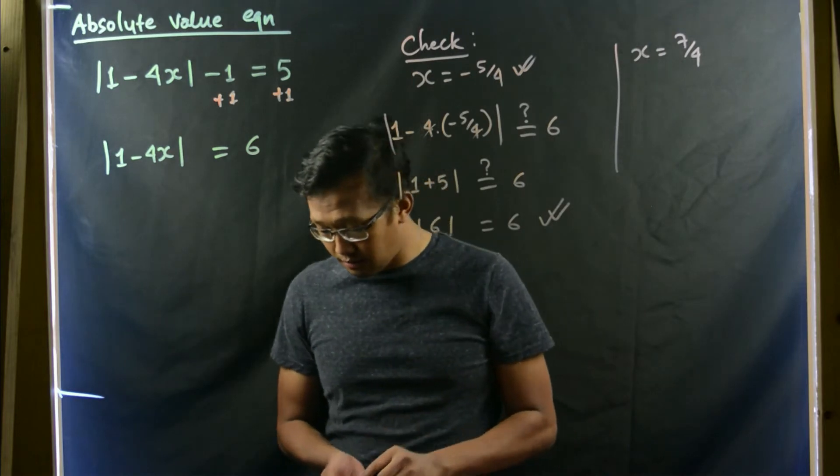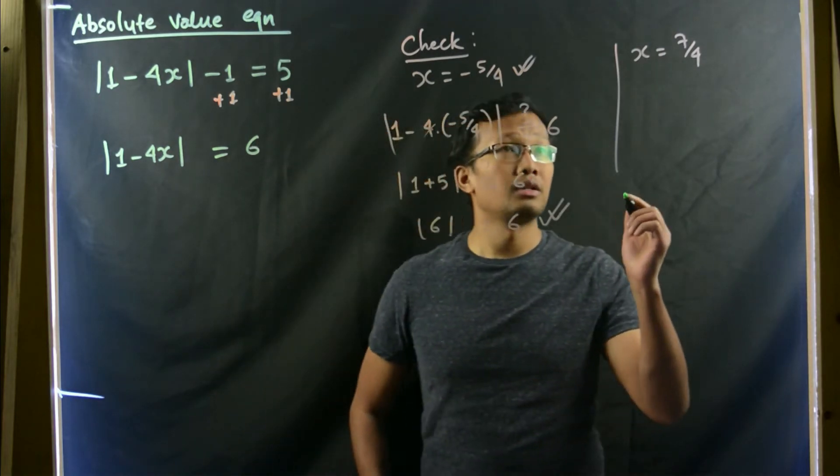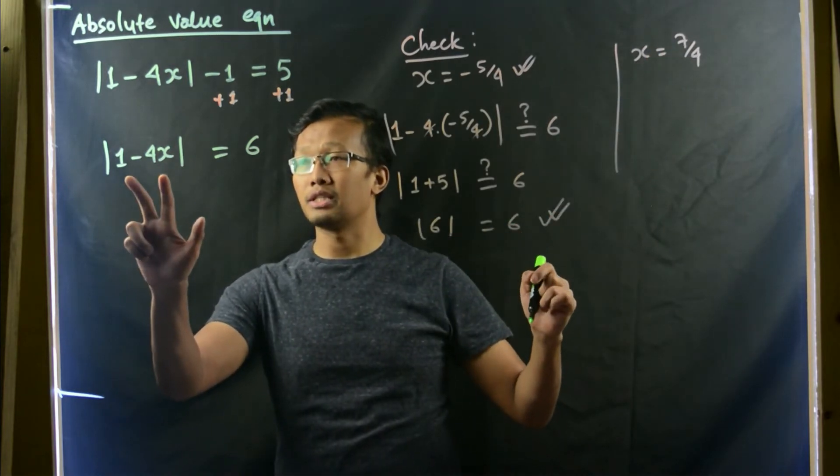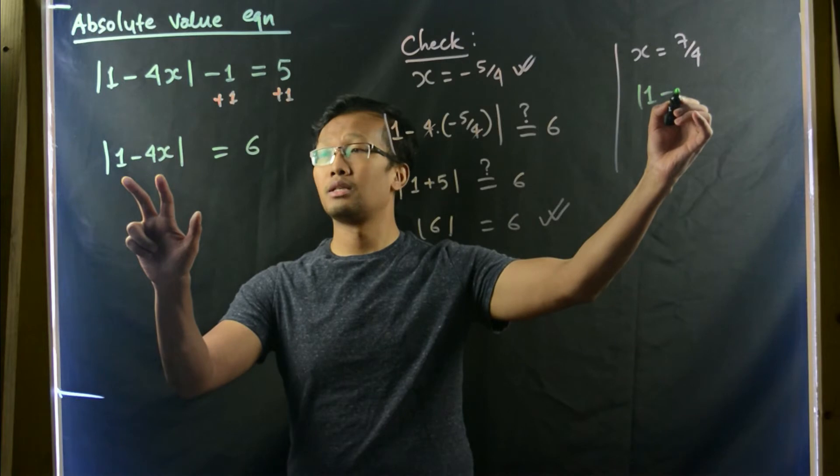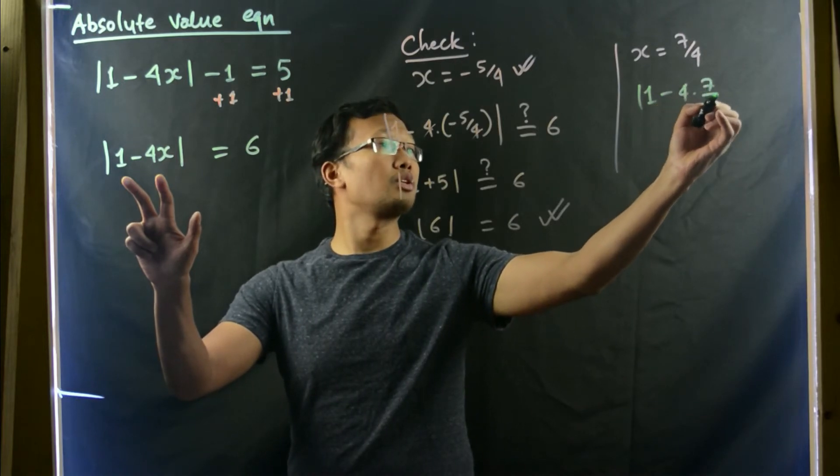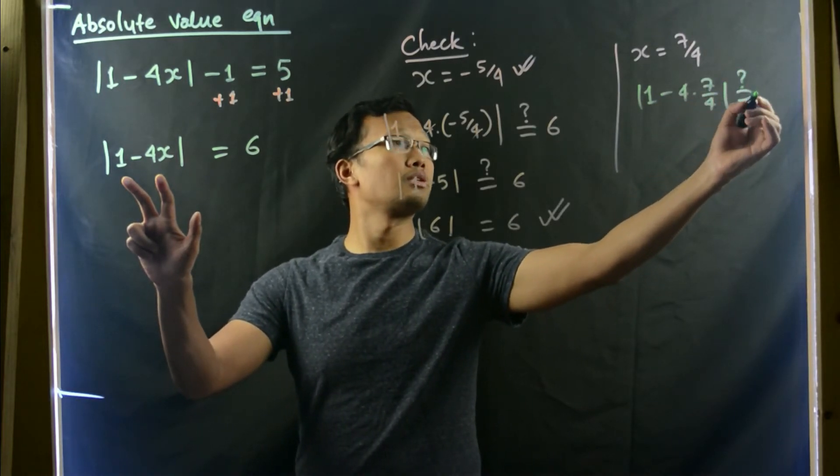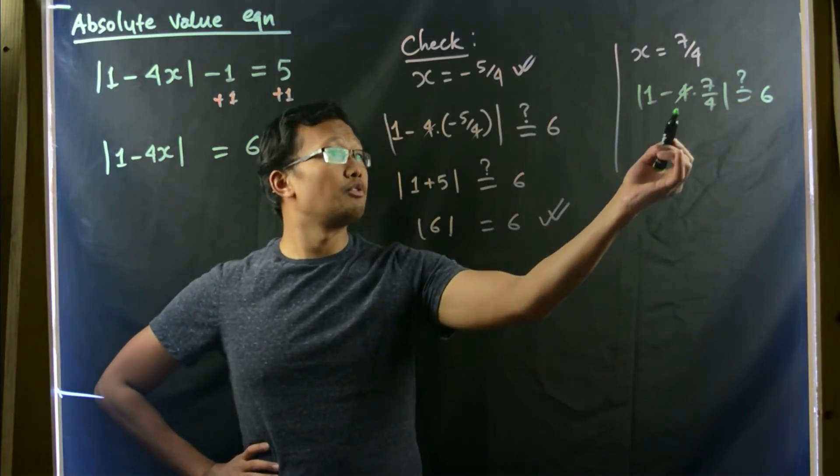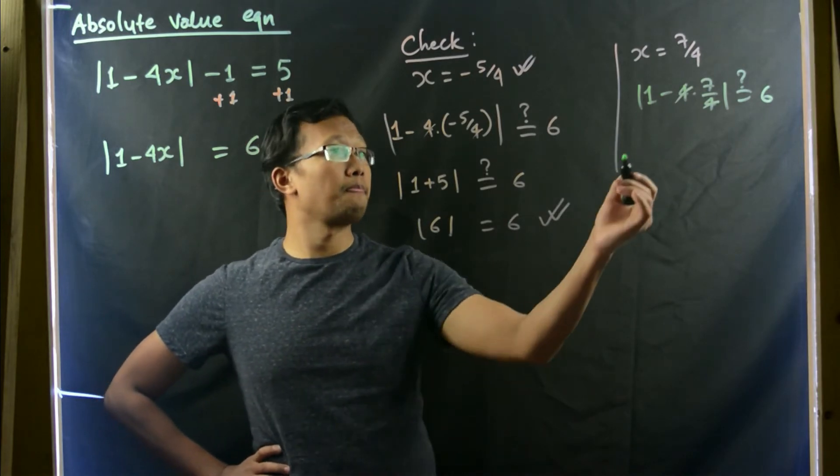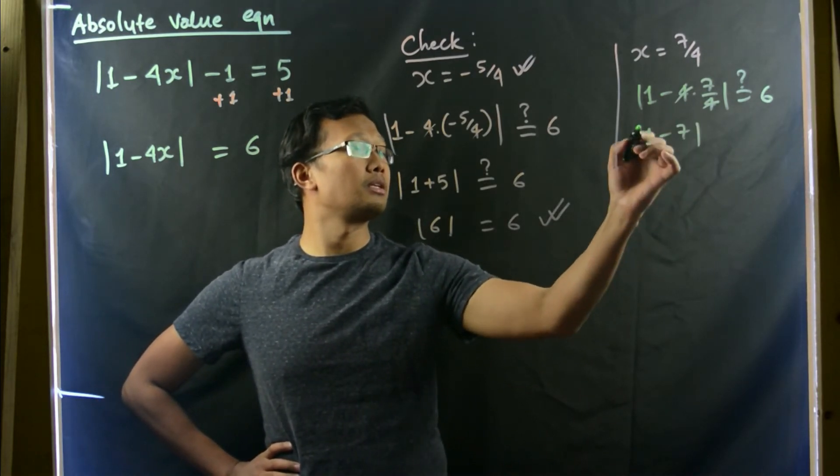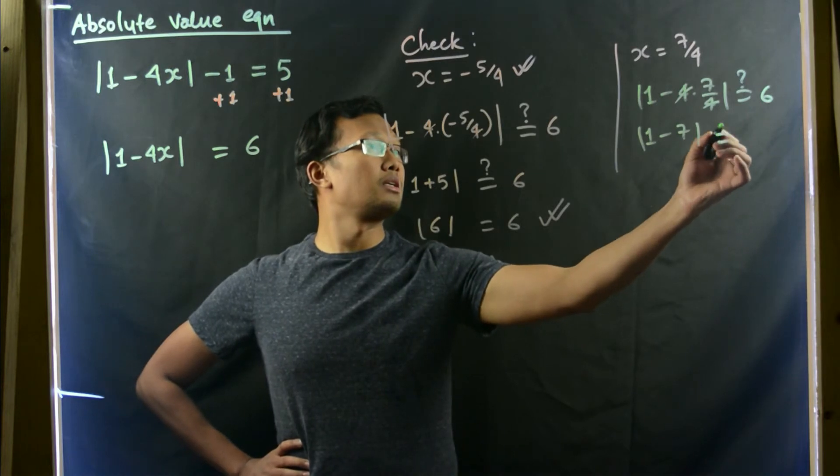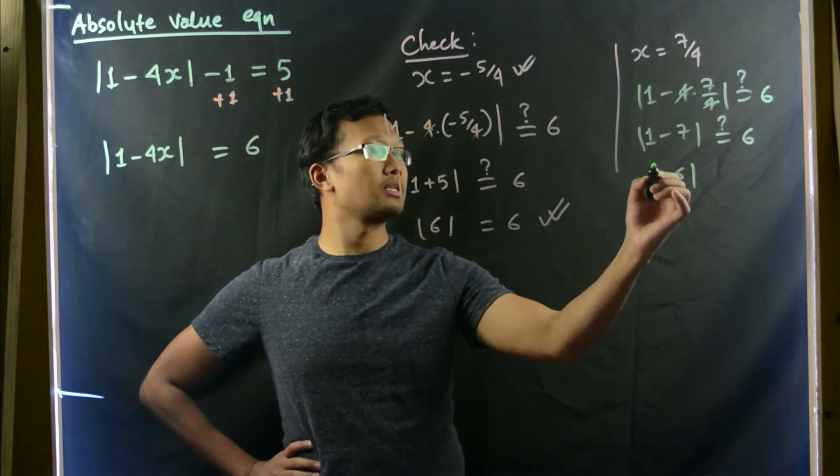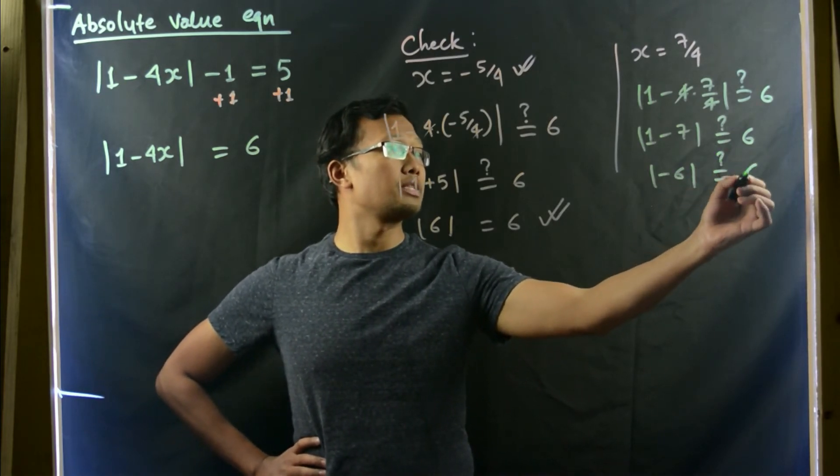Now for the second value, let us plug in this number, x equals 7 over 4, in this equation. This would be 1 minus 4 times 7 over 4. We are not sure whether this is equal to 6 or not. In this case also, 4 and 4 gets cancelled. Then we will be getting 1 minus 7, which is negative 6.